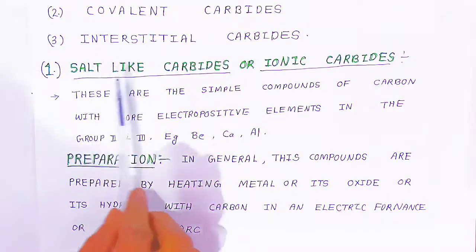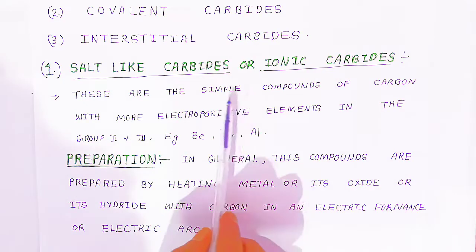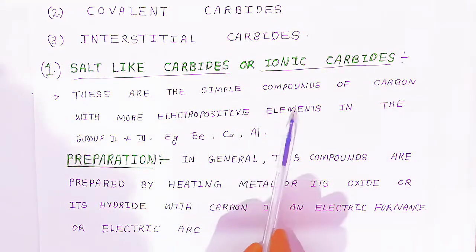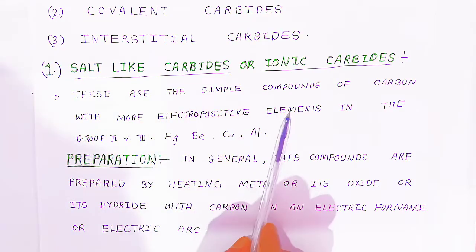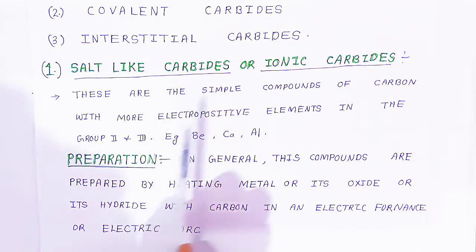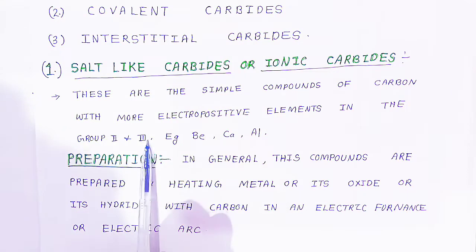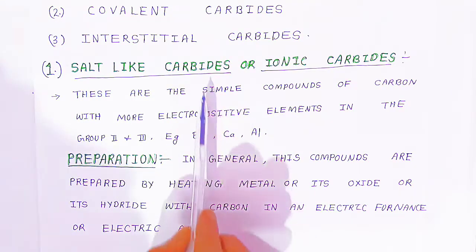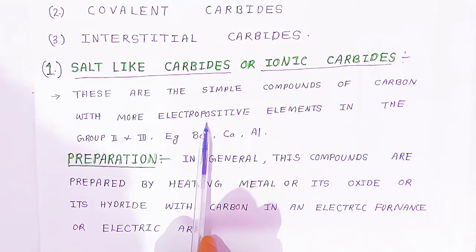Now we are going to see salt-like carbides, that is ionic carbides, and how they are formed. These are simple compounds of carbon with more electropositive elements. Carbon combines with electropositive elements of group 2 and group 3 — for example, beryllium, calcium, and aluminium — to form ionic carbides.